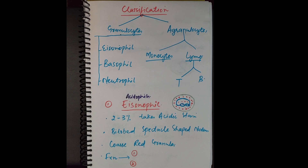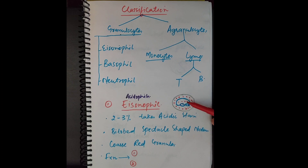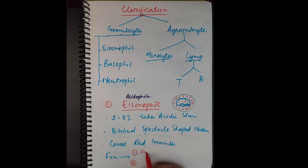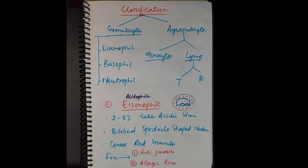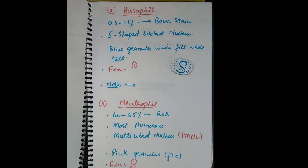We need to remember two points regarding every cell: the shape of the nucleus and the type of granules present. In eosinophils, the nucleus is bilobed and spectacle-shaped, and coarse brick-red granules are present, as we can see in the diagram. The function of eosinophils is anti-parasite action and involvement in allergic reactions — anti-parasite immunity and allergic reactions.